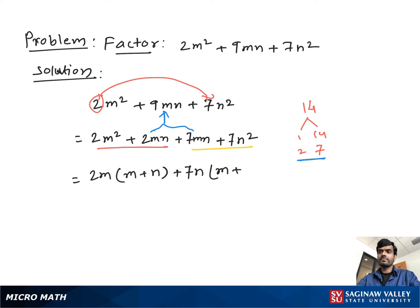Now from both sides we take out m plus n as common. Then we have left 2m plus 7n. And this is our final factor.